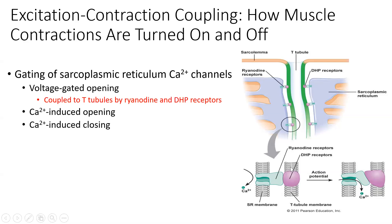The T-tubule shown here has the DHP receptor embedded in it, and the sarcoplasmic reticulum membrane has the ryanodine receptor embedded in it. These two receptors are coupled to each other — they're touching and communicating. So when the action potential propagates down the T-tubule, it comes in contact with the DHP receptor first, and that signals the ryanodine receptor to open up this channel.